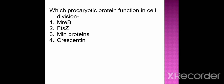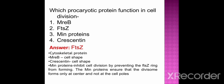Which prokaryotic protein functions in cell division? Option 1 is MreB, option 2 FtsZ, option 3 Min proteins, and option 4 is Crescentin. The correct option is FtsZ. FtsZ function is cell division. All of the above — MreB, FtsZ, Min protein, Crescentin — are cytoskeletal proteins. MreB helps in shape determination of the cell. Crescentin also helps in shape determination of the cell. Min protein inhibits cell division by preventing the FtsZ ring from forming. Min proteins ensure that the divisome forms only at the center and not at the cell poles.